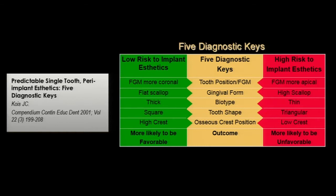John Kois published this article in 2001. He talked about the five diagnostic keys when it comes to single tooth implants — get this article, it's important. He looked at tooth position, the free gingival margin, gingival form, biotype, tooth shape, and osseous crest position.